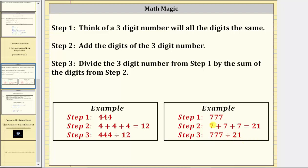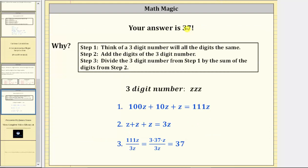And now, regardless of what three-digit number you began with, the answer is always 37. Let's take a look at why the answer is always 37.